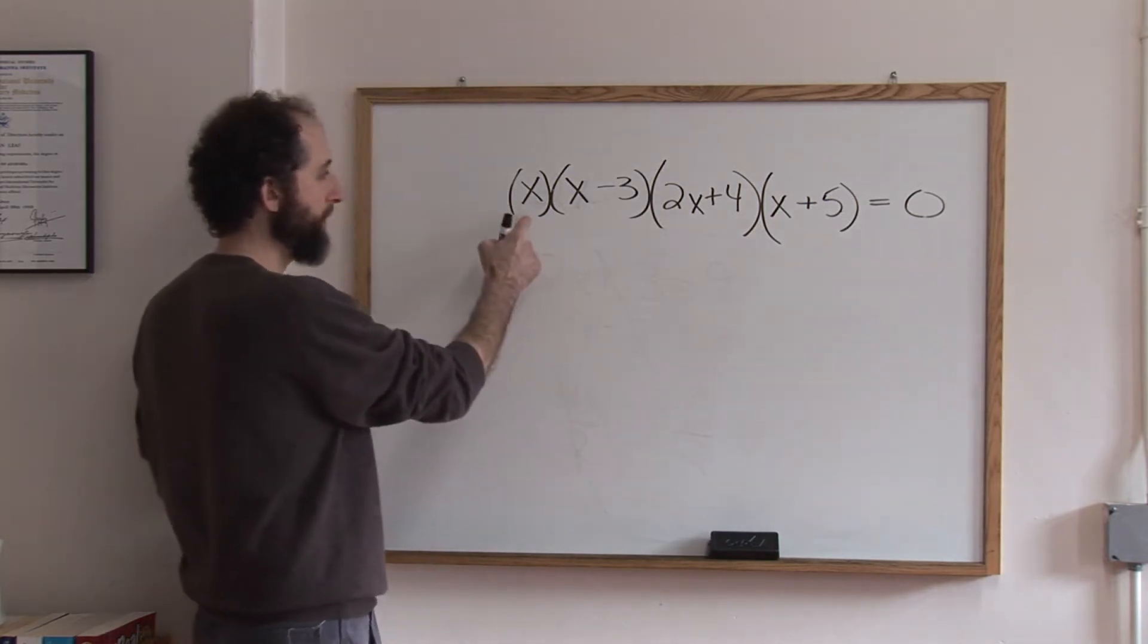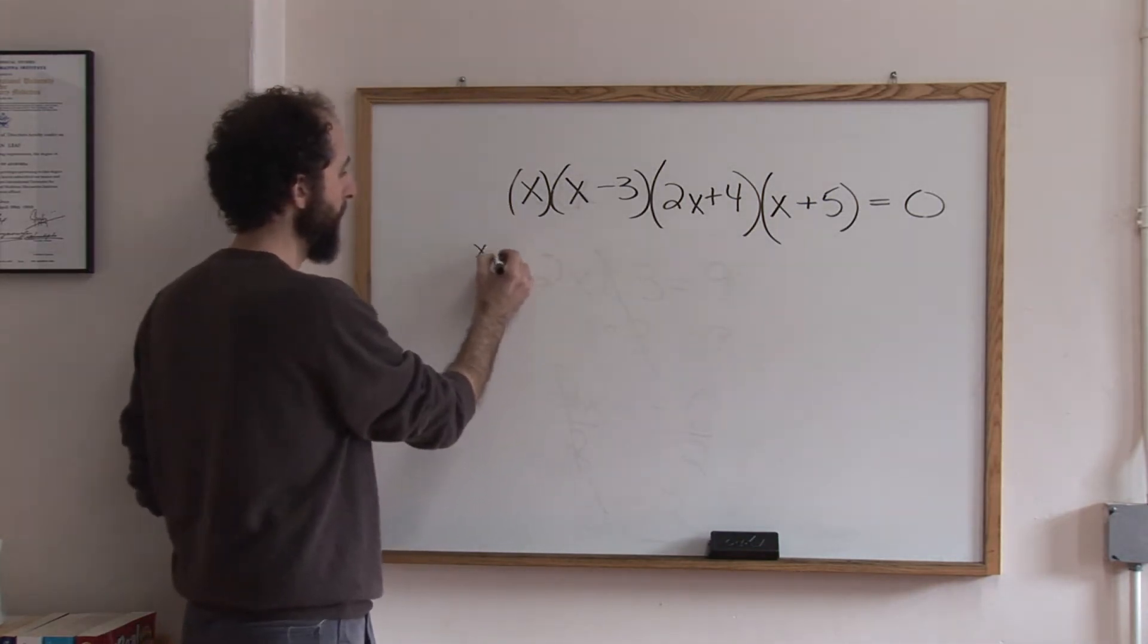So we're going to say, what would make this guy equal zero? And the answer is zero. So x could equal zero.